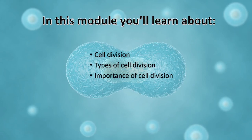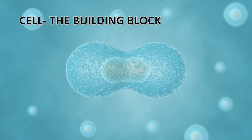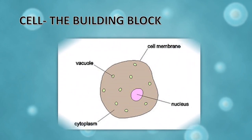When we talk about cell division, the very first thing that comes to mind is: what is a cell? The cell is the smallest structural and functional unit of an organism, which is typically microscopic and consists of cytoplasm and a nucleus, and is enclosed in a membrane.